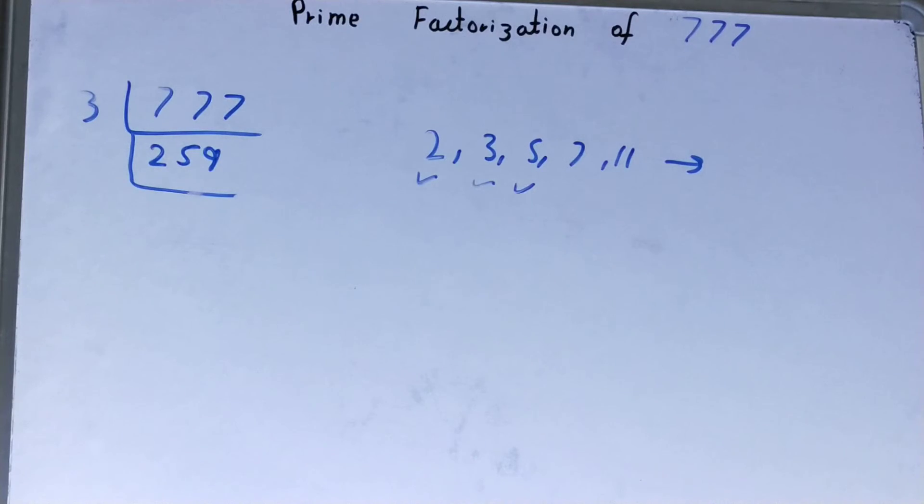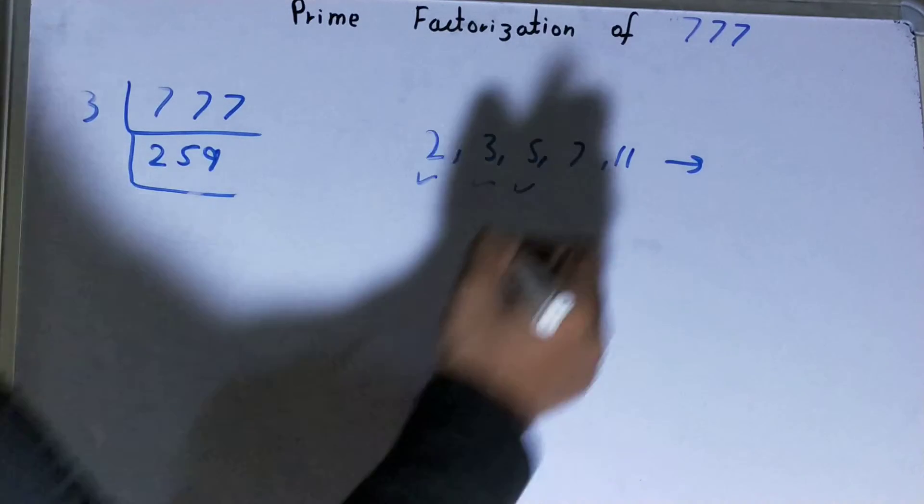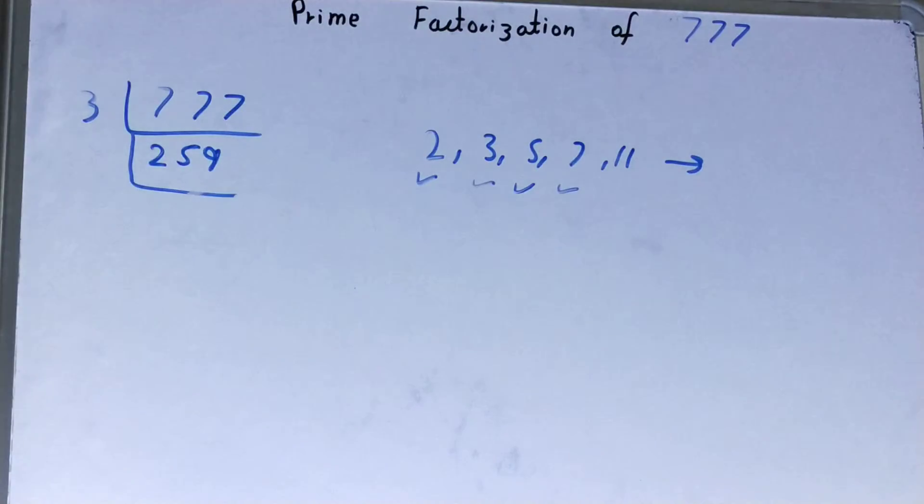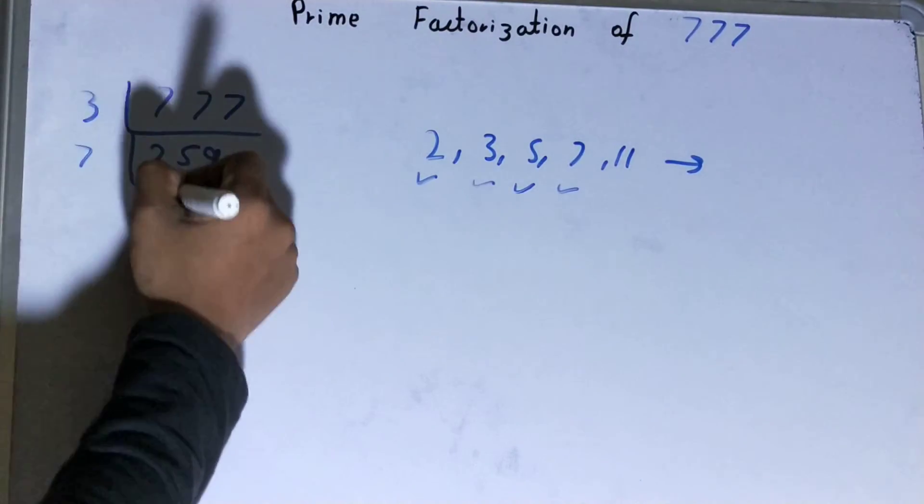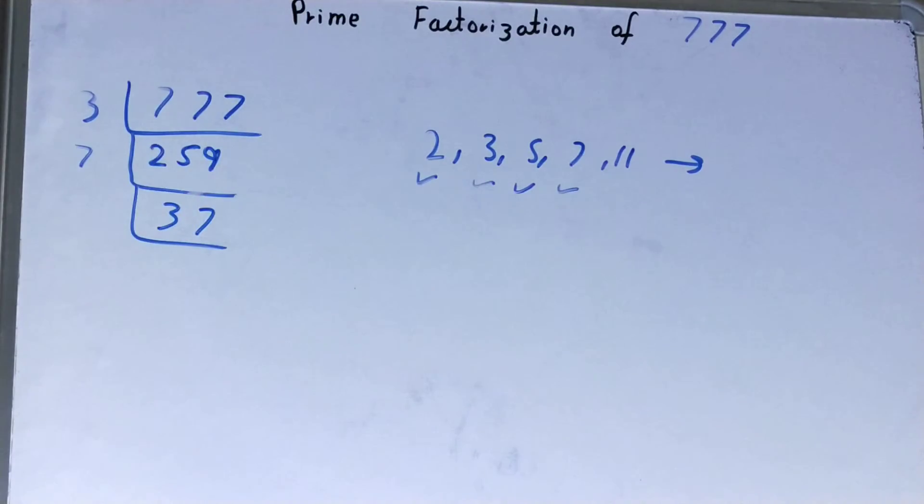So we'll go to the next number, that is 7. Is this divisible by 7? Yes, so we'll divide it and we'll have 37. Now, is this 37 divisible by 7? No.